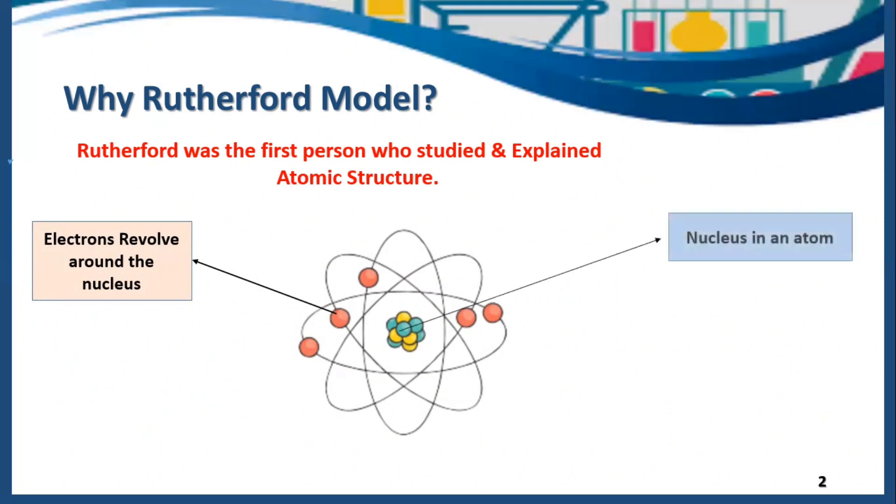Moreover, nucleus is present in the center of an atom which contains protons and neutrons. Most of the space that is present in an atom is empty. Which are the equipments or tools that Rutherford used in order to perform his experiment?